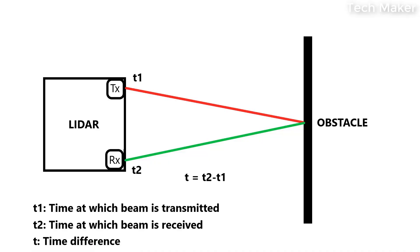The laser transmitter ejects the light beam. The ejected light beam hits the obstacle and reflects back. The reflected beam is received by the LiDAR receiver. The time is measured from transmission to reception, and by using this time period, it calculates the distance of the obstacle.